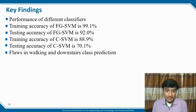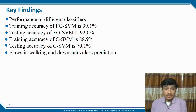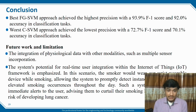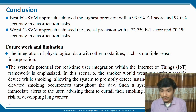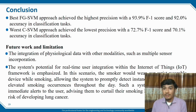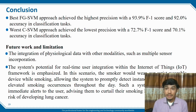In conclusion, the FGSBM approach achieved the highest precision with 93.9% F1 score and 92.0% accuracy in the classification task, while CHBM achieved 72.7% F1 score and 70.1% accuracy. The integration of physiological data with other modalities such as multiple sensor incorporation was explored. We successfully developed a device that accurately detects smoking events, and in the future it will work as a platform supporting IoT-based smartphone alarming systems, ML, DL, and AI-based multipurpose projects toward cancer detection and medication.